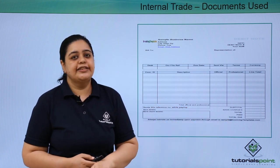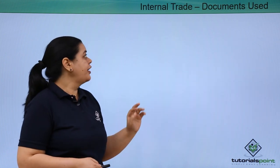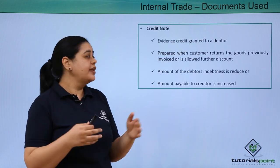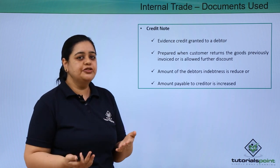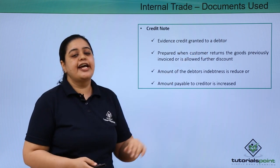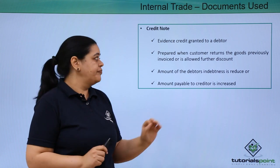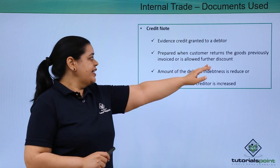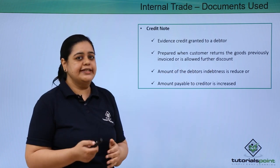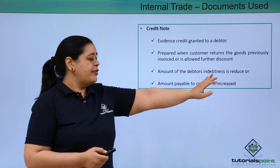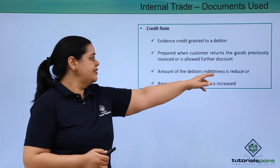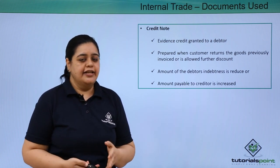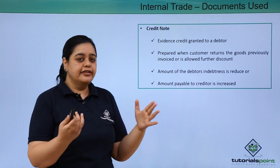The next document is the credit note, which is opposite to the debit note. This is evidence that credit has been granted to a debtor. It is prepared when the customer returns goods previously invoiced or is allowed a further discount. In this case, the debtor's indebtedness is either reduced or the amount payable to the creditor gets increased.